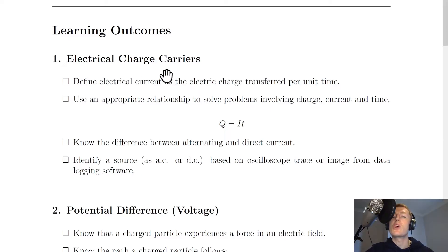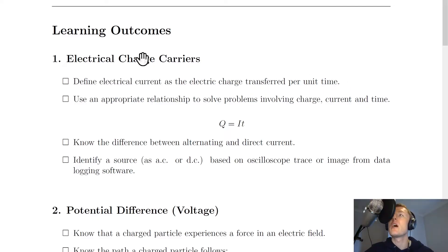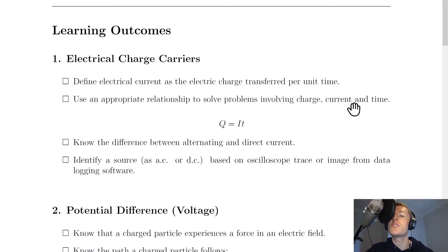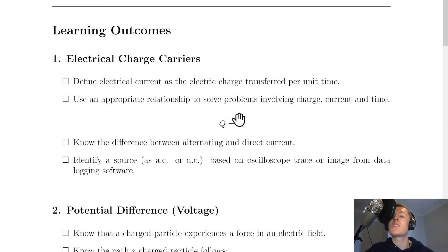For section one, electrical charge carriers, you need to be able to define electrical current as the electric charge transferred per unit time — that's a definition you just need to know. You also need to use the relationship Q = IT to solve problems involving charge, current, and time, rearranging for Q, I, or T depending on what you're asked. Remember you get this equation on the relationship sheet in your exam.